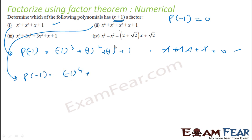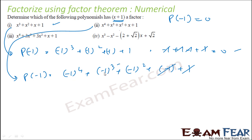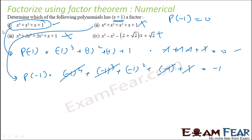For the second polynomial, p(minus 1) gives: (minus 1) to the power 4 plus (minus 1) to the power 3 plus (minus 1) to the power 2 plus (minus 1) plus 1. Some terms cancel: this gives 1 minus 1 plus 1 and we are left with minus 1. Since it is minus 1, not equal to 0, x plus 1 is not a factor. Similarly you can try the other two — they are also not factors. Only in the first case is x plus 1 the factor.